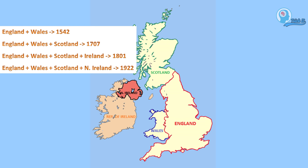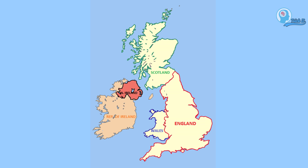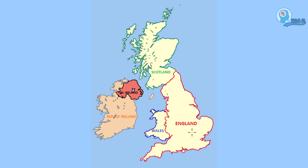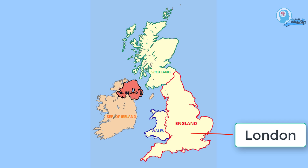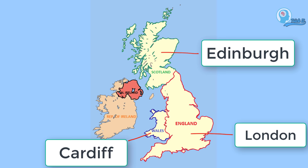Therefore, at present, United Kingdom has four countries: Scotland, England, Wales and Northern Ireland. Each country has its own capital. The capital of England is London, the capital of Wales is Cardiff, the capital of Scotland is Edinburgh, and the capital of Northern Ireland is Belfast.